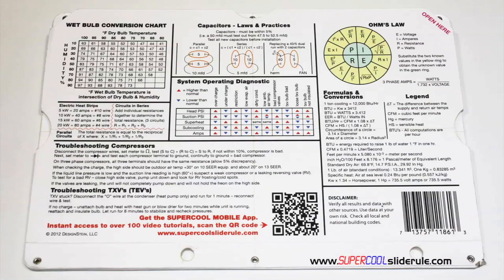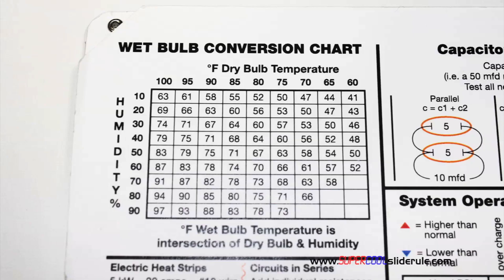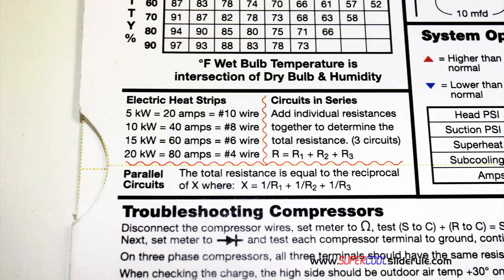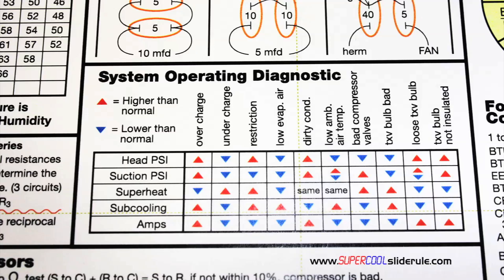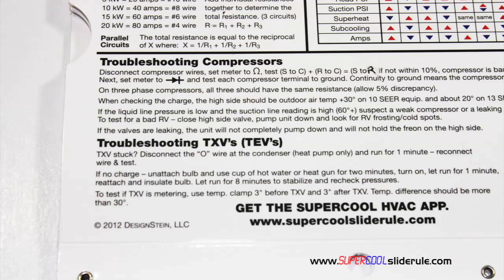The back cover contains required formulas. It has capacitor rules and practices, a wet bulb conversion chart, how to perform computations on series or parallel circuits, an electric heat strip guide, a complete system troubleshooting diagnostic chart, and how to troubleshoot compressors and TXV.